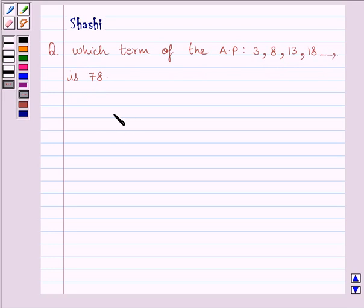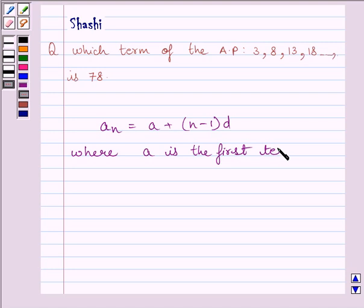First of all, let us understand that the nth term is equal to A plus n minus 1 multiplied by d, where A is the first term of AP and d is the common difference between two consecutive terms.